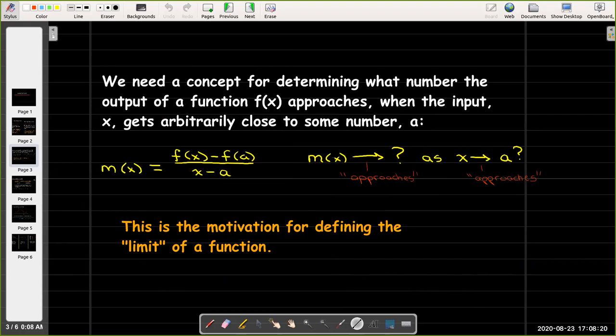So in general, we're going to leave our velocity problem for a minute, and let's just focus on the tangent line problem. We could define the slope of the secant line as a function of x, and we'd like to know what does that slope approach as x gets arbitrarily close to a? This is the idea behind the limit of a function.